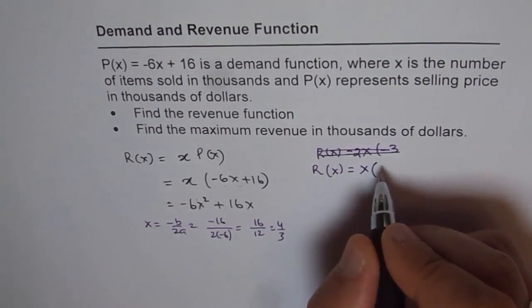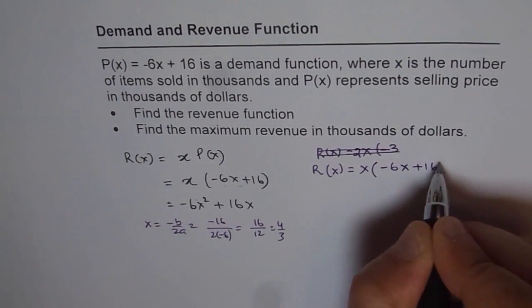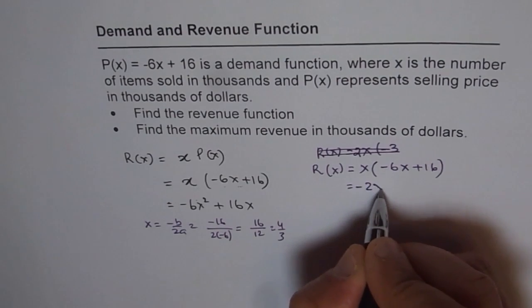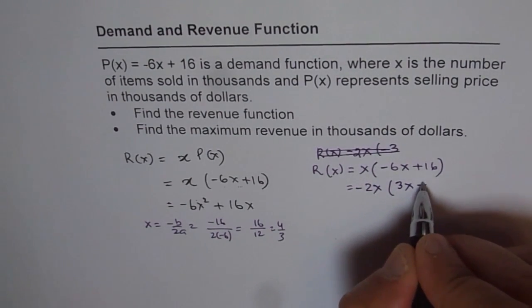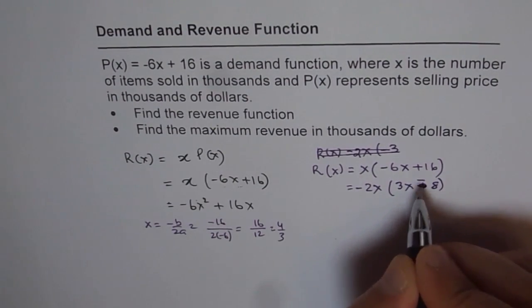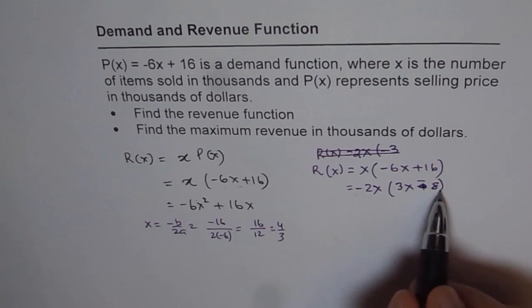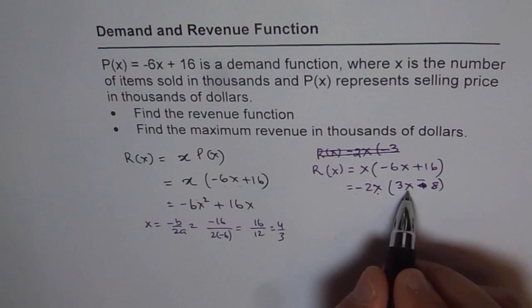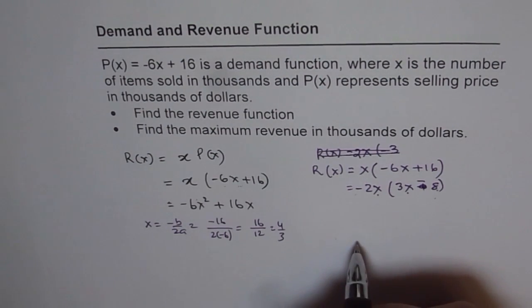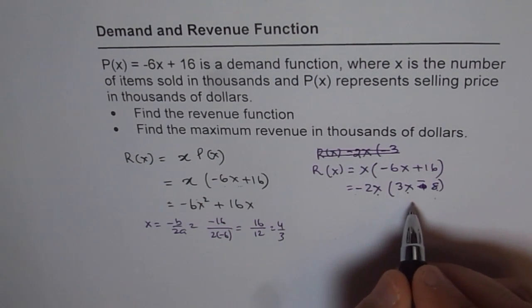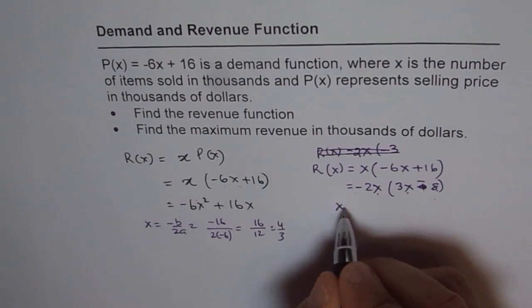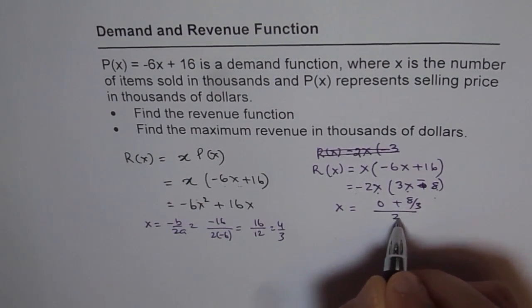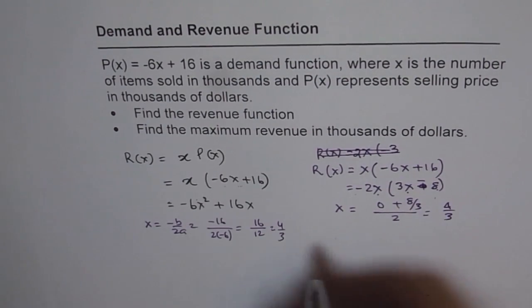Starting with the revenue function x times (-6x + 16), you can factor out -2 and get -2x(3x - 8). This could be 0 for x = 0 or x = 8/3. Those are the two points, and the average of those will give you the axis of symmetry. So at x = 0 or x = 8/3, take the mean: you get 4/3, the same result.